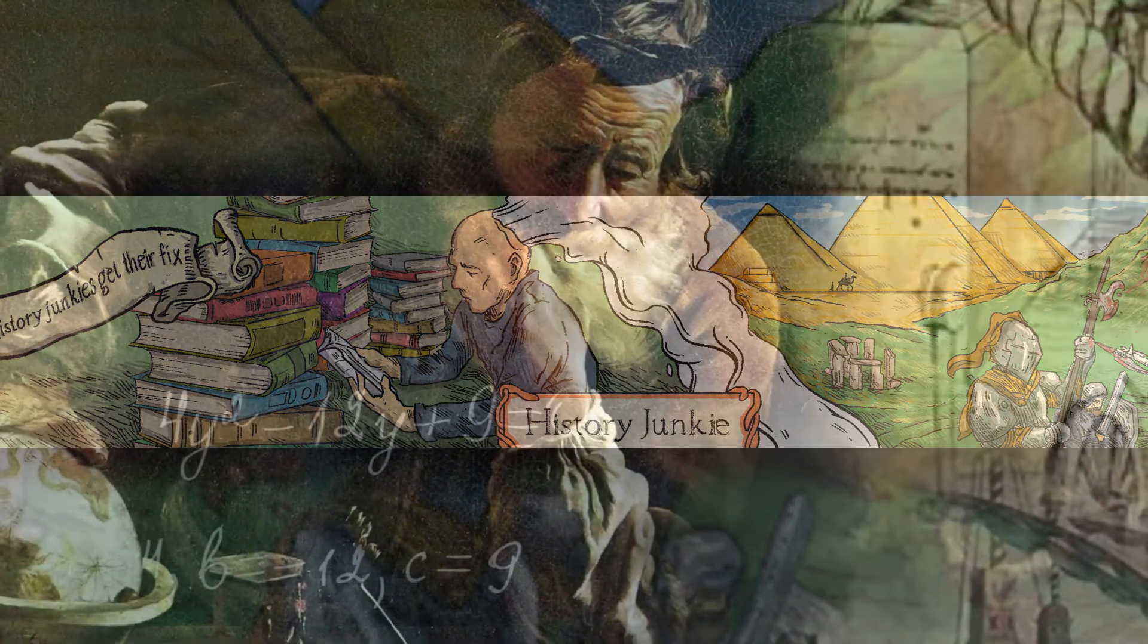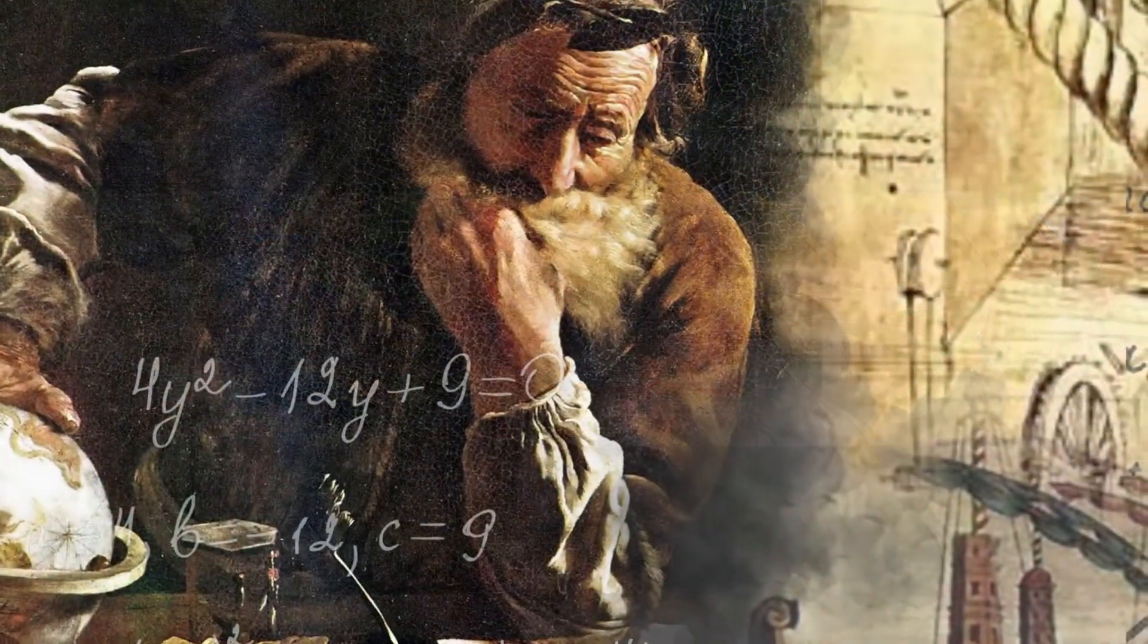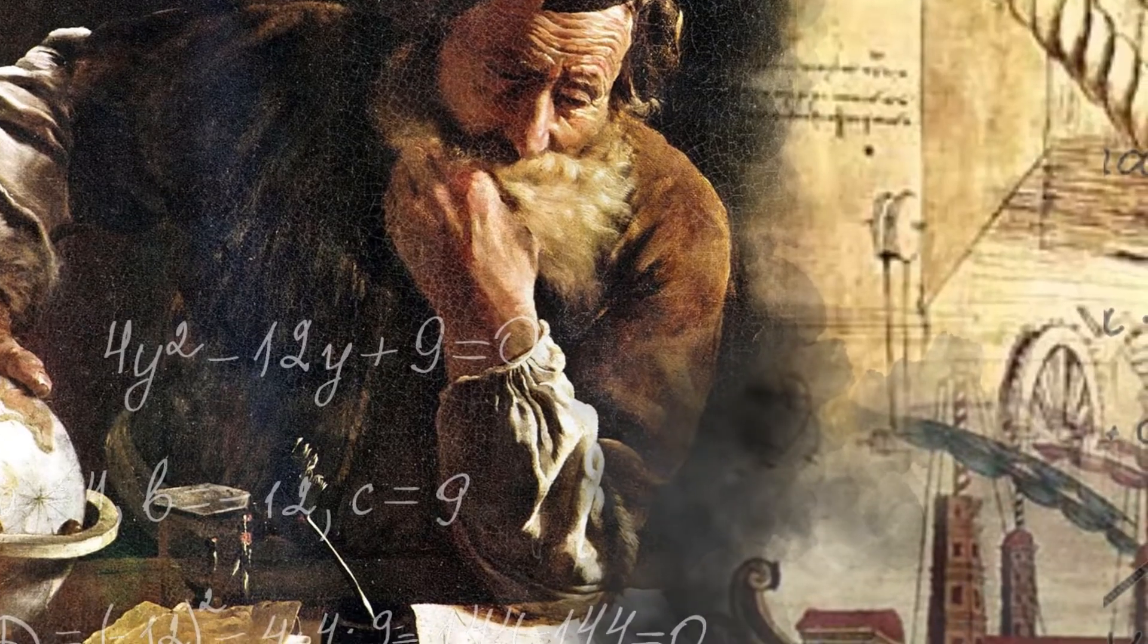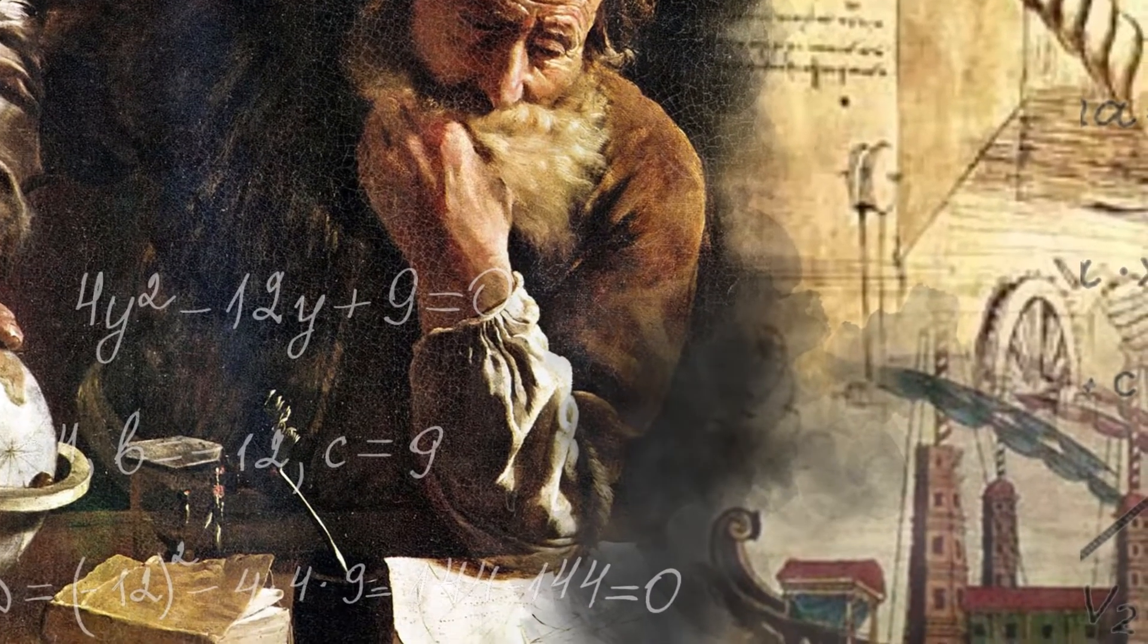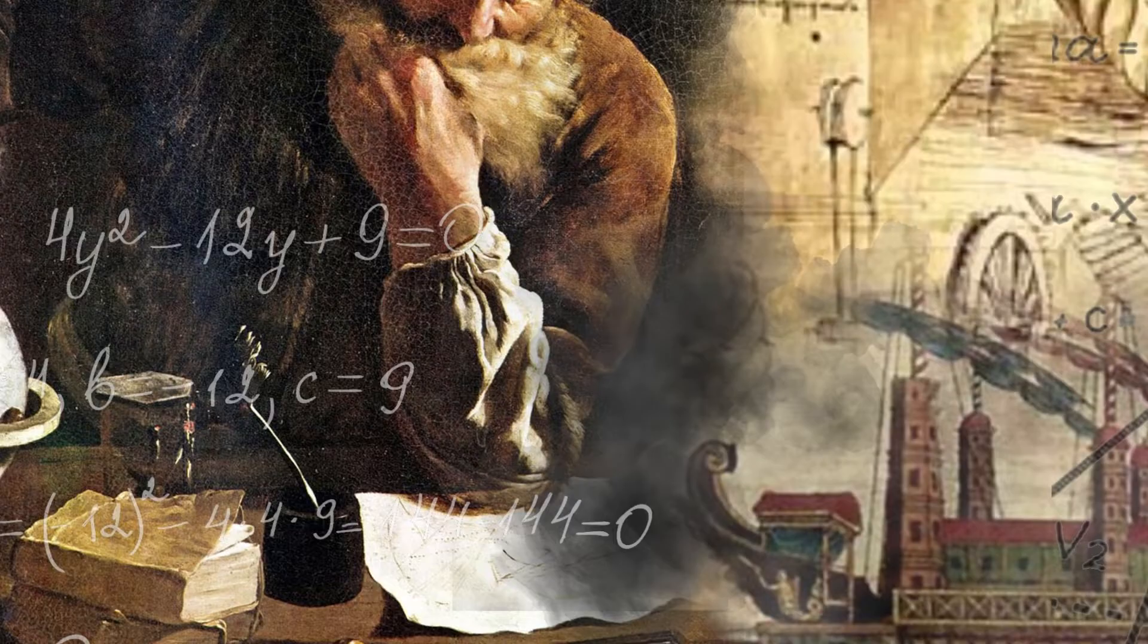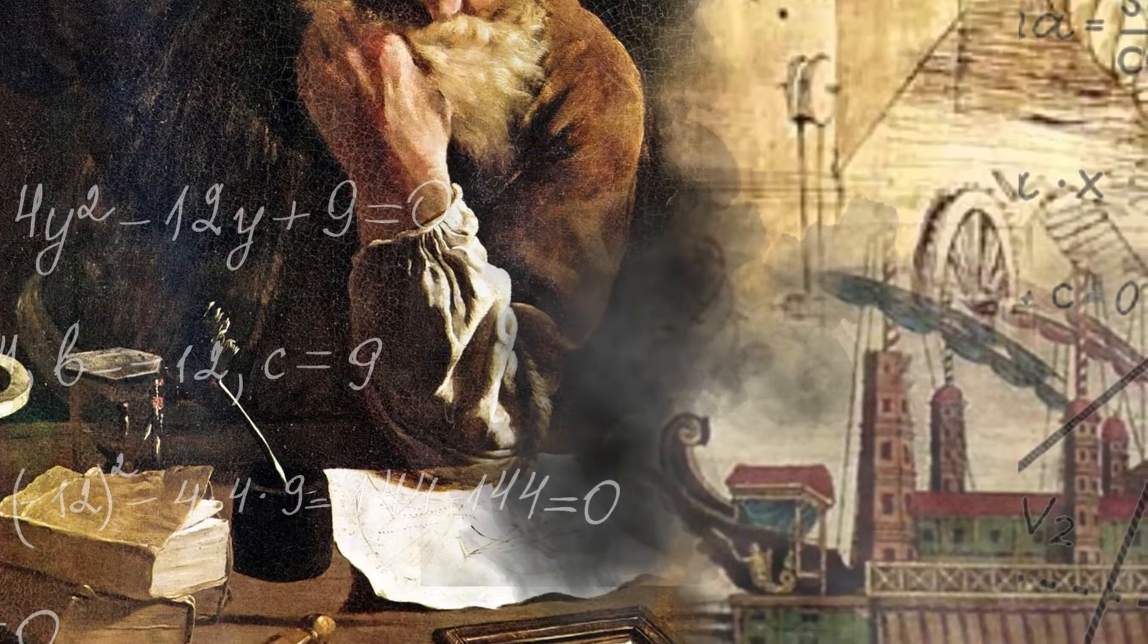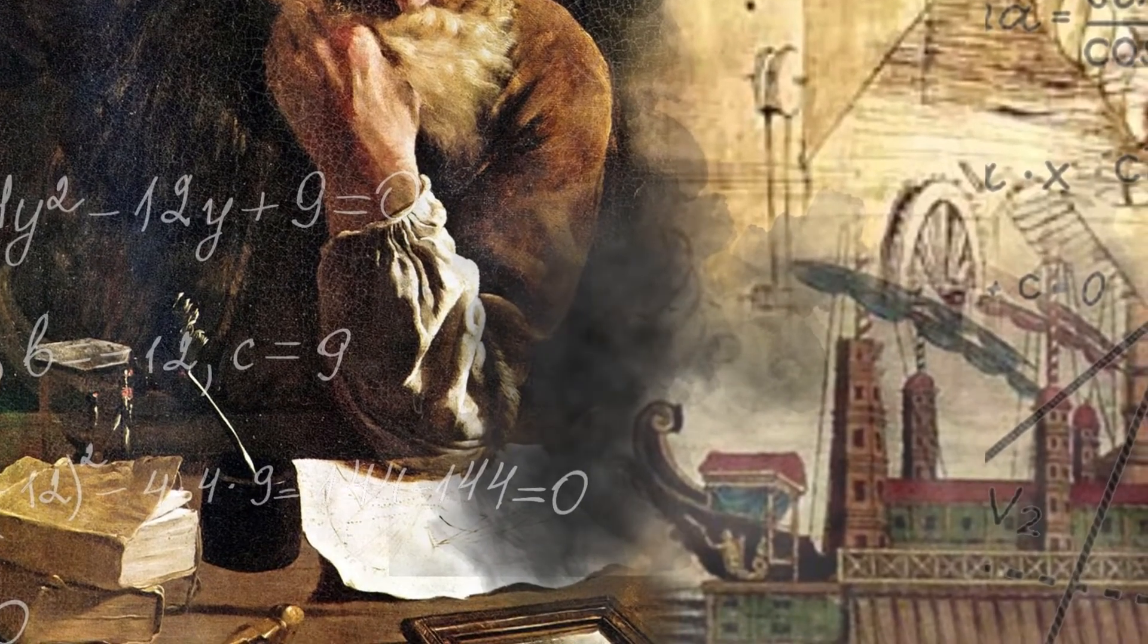Around 260 BCE, King Hieron II of Syracuse in Sicily had a problem. He had commissioned the construction of the Syracusia, which, at 4,064 tons, was one of the largest ships ever built.